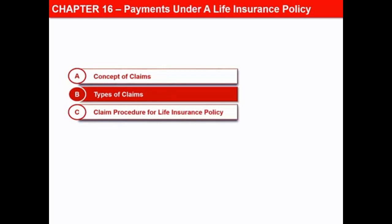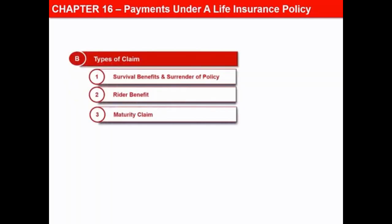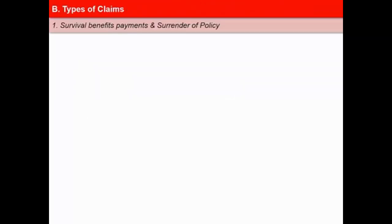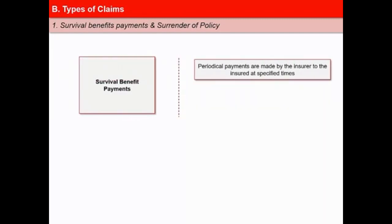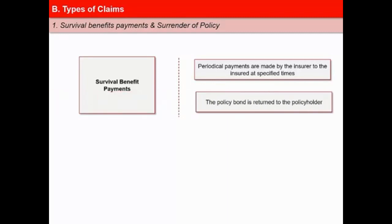In the next video of the lesson, Payments under a Life Insurance Policy, we will discuss various types of claims. Let us first learn about the various types of claims whose payments may occur during the policy term. The first type is survival benefit payments — periodical payments made by the insurer to the insured at specified times during the term of the policy. The policy bond is returned to the policyholder bearing an endorsement of payments made after each survival benefit installment.